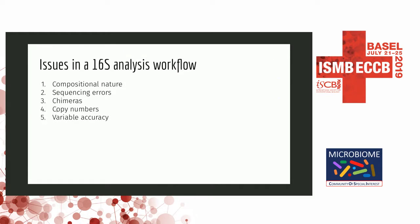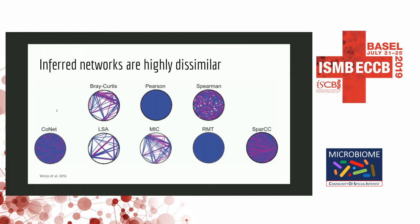There are a few issues during the 16S analysis workflow which contribute to errors downstream. The main ones are the compositional nature of the data, sequencing errors, chimeras, copy number variations, and variable accuracy depending on which part of the 16S gene is sequenced. As a result, a variety of tools exist for each step, but these tools are not in agreement with each other — networks inferred from the same dataset using different methods look different, and each step contributes to dissimilarity at the end.